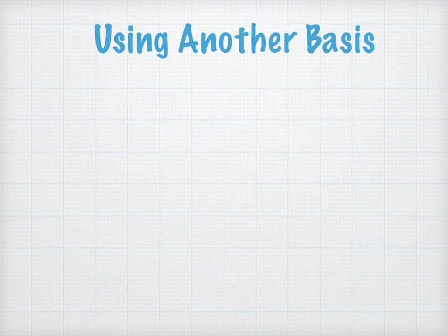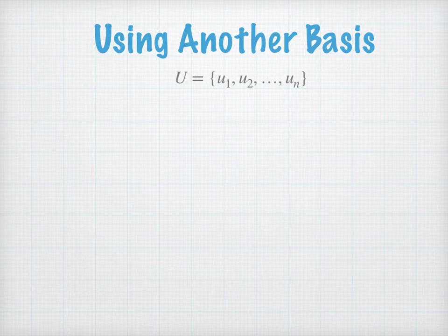What if we have another basis in Rn? Let's say U equals a set of vectors u1, u2 to un. We want to find a matrix representation for L using this basis.